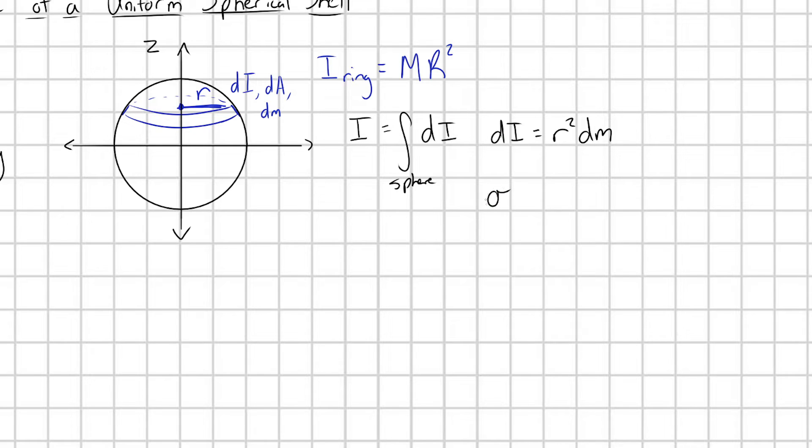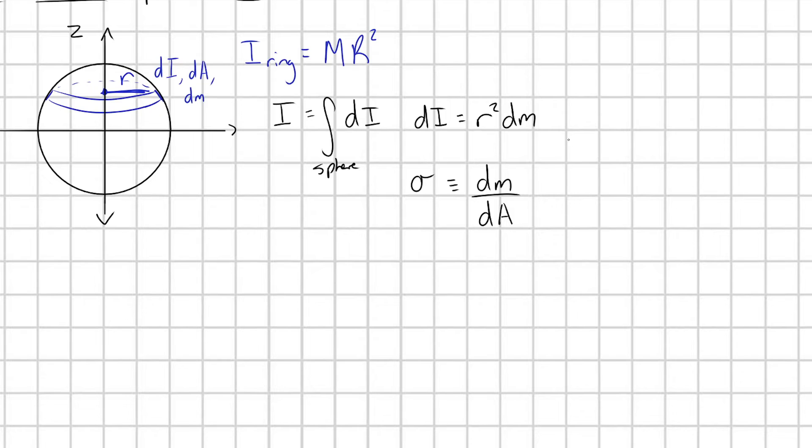Sigma is the symbol we use for area mass density. And it is defined as dm per some dA, the amount of mass per some area element dA. So I can rewrite dm as equal to sigma dA.